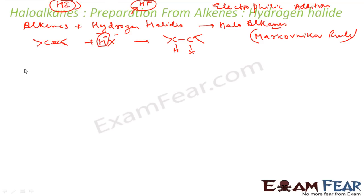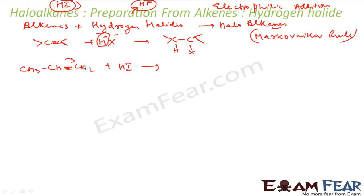Now let's see this reaction. Example: I have CH3-CH=CH2. I react with HI. So what will happen is this double bond will break. This can break either in this direction or this direction. Let's see both possibilities. If it breaks in one direction: CH3, CH, CH2 — this will get minus, this will get plus. And if it breaks in the other direction, you get CH3 minus and CH2 plus.